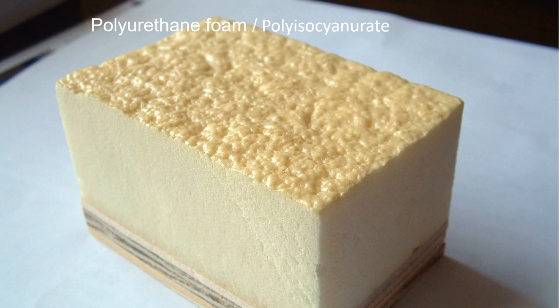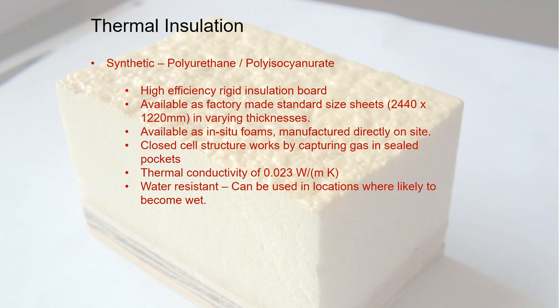The most common type of insulation is polyurethane, or polyisocyanurate, which is usually just called PIR insulation. You might see this referred to as Kingspan, though that is a trade name and there are many different companies that make it. It's a very efficient form of insulation, made in standard sizes and easily cut to fit between structural members. You can also get this as a foam which is pumped into voids or fills irregular areas — it's the same sort of stuff you get in cans like expanding foam from B&Q. It has quite good thermal conductivity of 0.023, which in layman's terms is about twice as good as mineral wool, and it's water resistant.